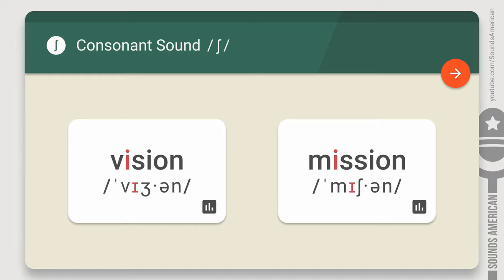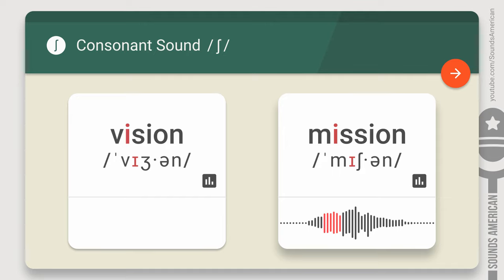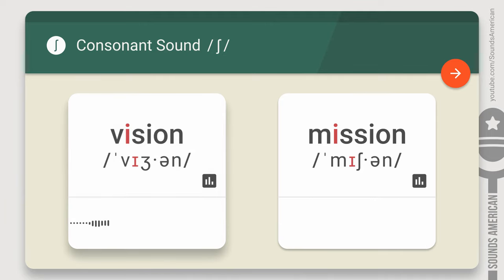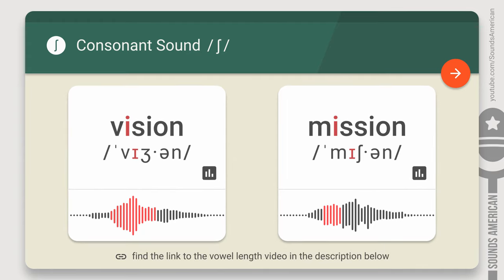And finally, always keep in mind the vowel length rule. The SH is a voiceless consonant, so vowel sounds before the SH are typically shorter than they are before voiced consonants. Compare the length of the vowel when it's before the voiced ZH and the voiceless SH sounds: 'vision' vs. 'mission'. We talked about the vowel length rule in detail in one of our previous videos — don't forget to check the link in the description below.